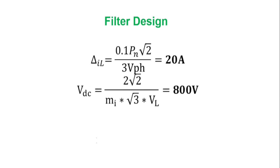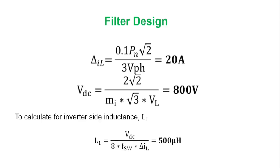For the inverter-side inductance L1, we use the following formula, and the value of the inductance L1 gives us 500 microhenry. And L2 is a function of the inverter-side inductance, which gives us 0.3 times L1, giving us 150 microhenry.